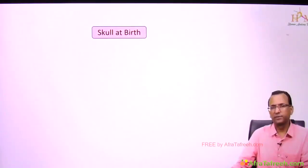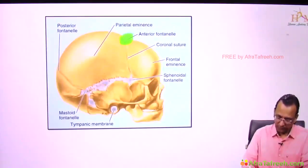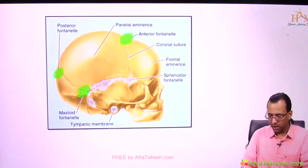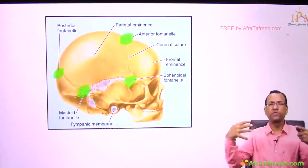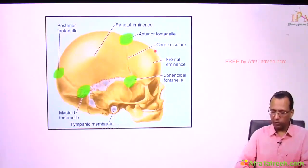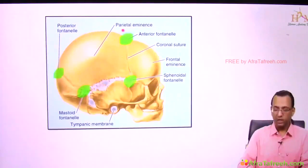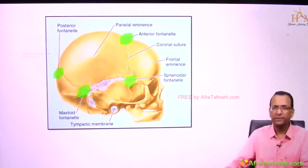When you are looking at the skull at birth, there are structures called fontanels. As the skull is developing, there is an anterior fontanel, a posterior fontanel, a mastoid fontanel which is posterolateral, and a sphenoidal fontanel which is anterolateral. Fontanels are the spaces between skull bones that have not yet fused — for example, the frontal bone developing to meet the parietal, or the parietal developing to meet the occipital, or the parietal developing toward the temporal bone.